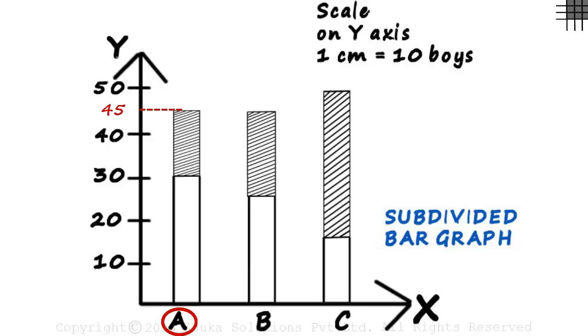Division A has around 45 students. Division B has also around 45 students. And Division C has 50 students.